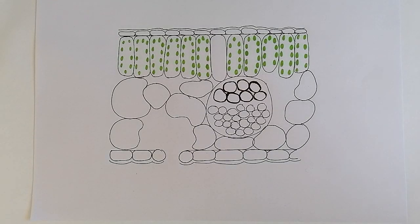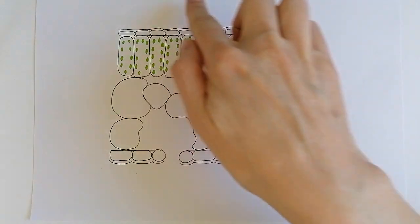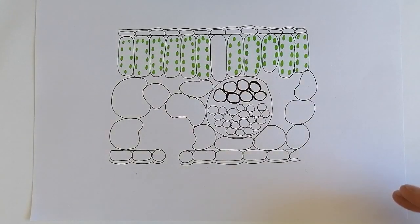Hi everybody, this is Mrs Sykes and this is a basic overview of leaf structure. Now this picture here is obviously not leaf shaped.